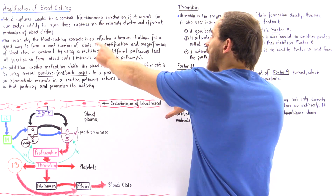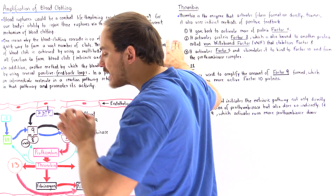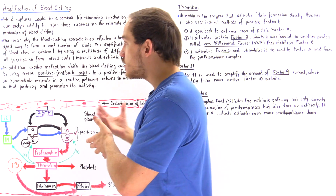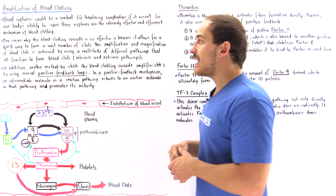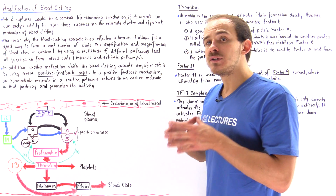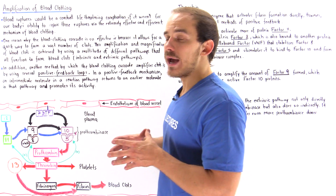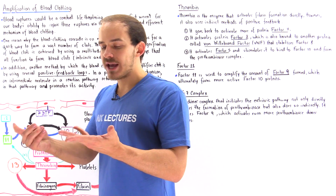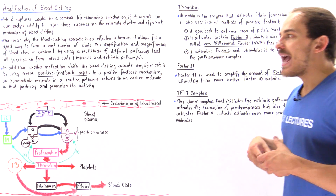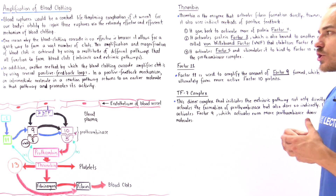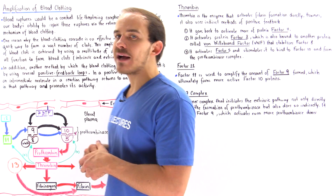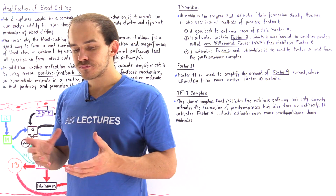This amplification and magnification of blood clots in the blood clot cascade is achieved by using multiple different pathways. We have the intrinsic pathway and we have the extrinsic pathway, and it's also achieved by using positive feedback loops.